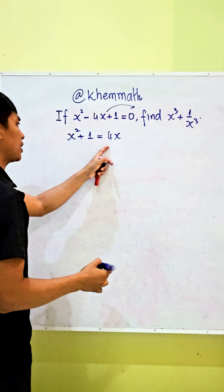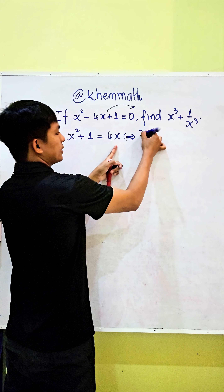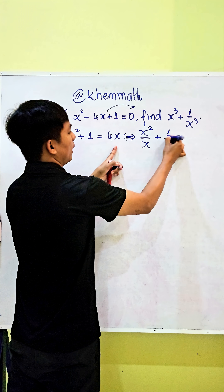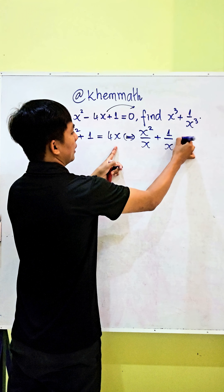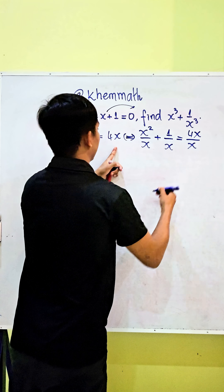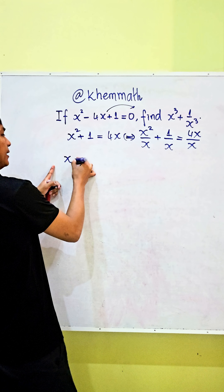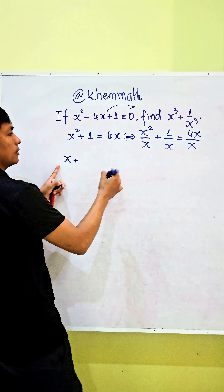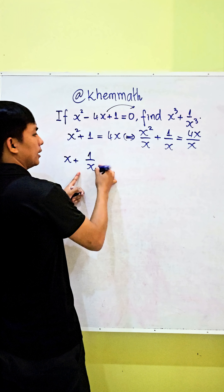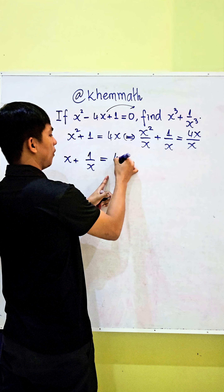And we divide both sides of this equation by x. We get x squared divided by x plus 1 divided by x, equal to 4x divided by x. Here we simplify x, and we get x plus 1 divided by x equals 4.